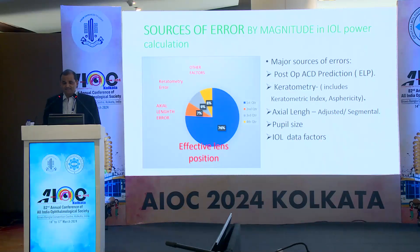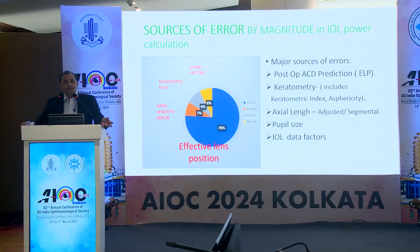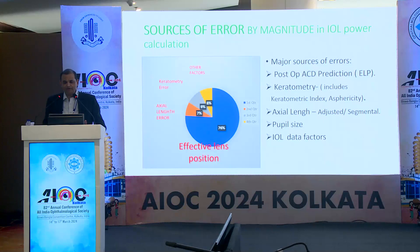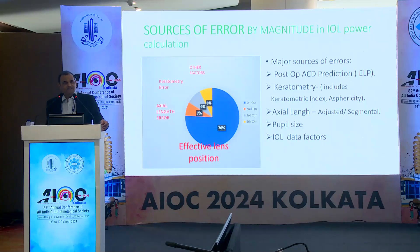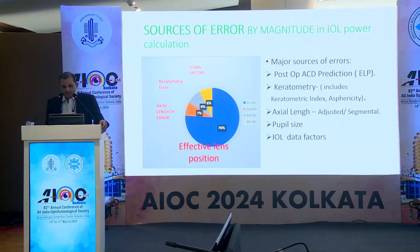As far as axial length is concerned, we have some adjustments for longer eyes. Dr. Tejas will cover how we adjust using the Olsen modification and newer optical biometry like segmental biometry — all these are emerging for the development of IOL power calculation formulas. The least addressed part is pupil size; we are still not considering pupil size in IOL power calculation, but over time it is going to have a boom once the first three criteria are fulfilled.